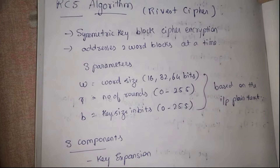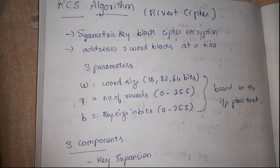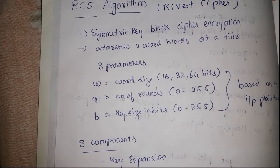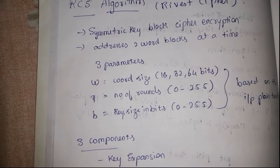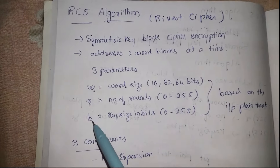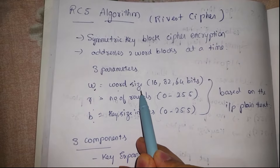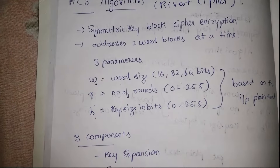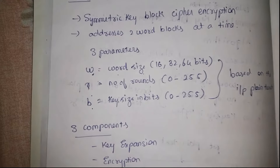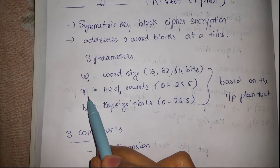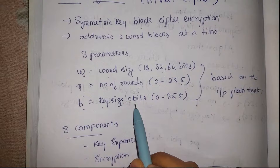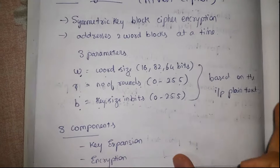RC5 is a block cipher, symmetric key encryption-based algorithm. In this algorithm it addresses two blocks at a time — the plain text is divided into two blocks, each a two-word block. There are three basic parameters: w, r, and b. W is the word size — the size of the plain text to be encrypted — which can be 16, 32, or 64 bits. R is the number of rounds, ranging from 0 to 255. B represents the key size in bits.